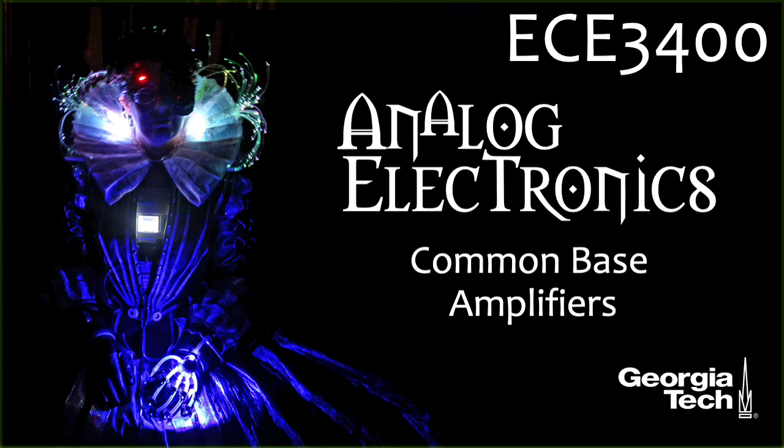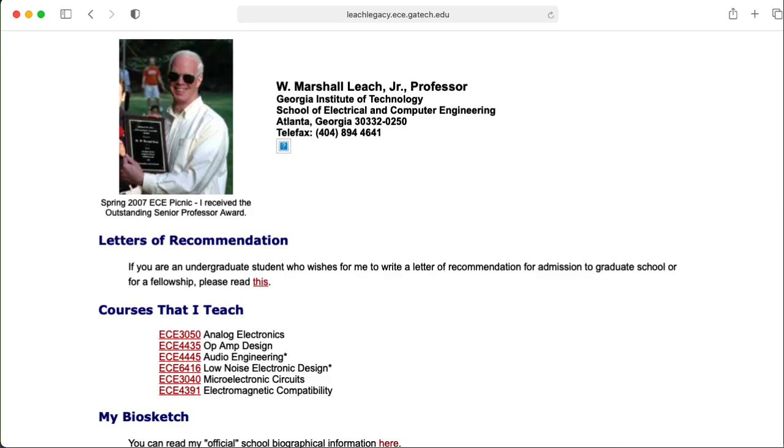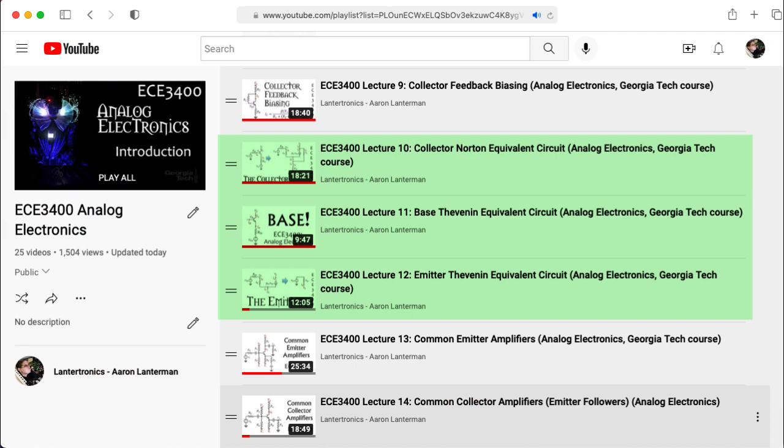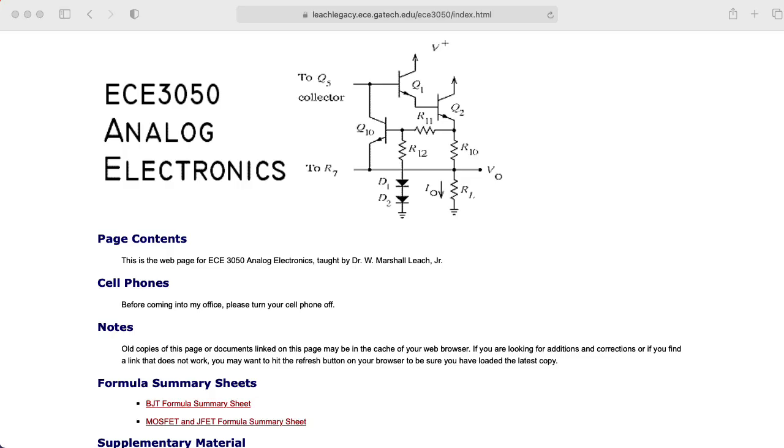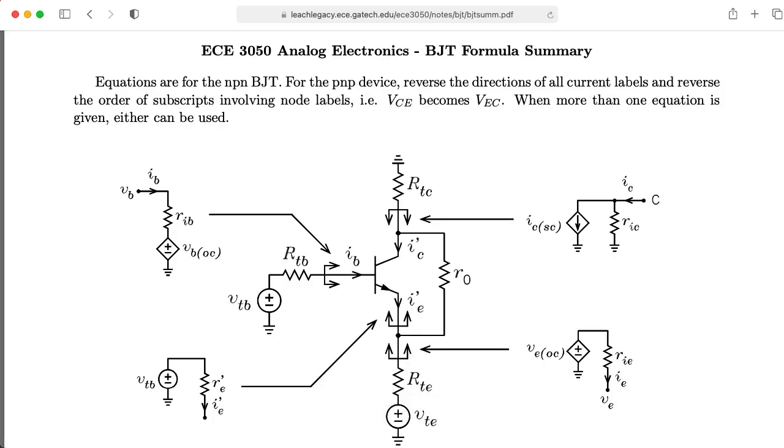As in the last two lectures, we will use a set of Norton and Thevenin equivalents developed by my colleague Marshall Leach. We derived these equivalent circuits in an earlier trilogy, and you can find them summarized on the BJT formula sheet on Professor Leach's website.